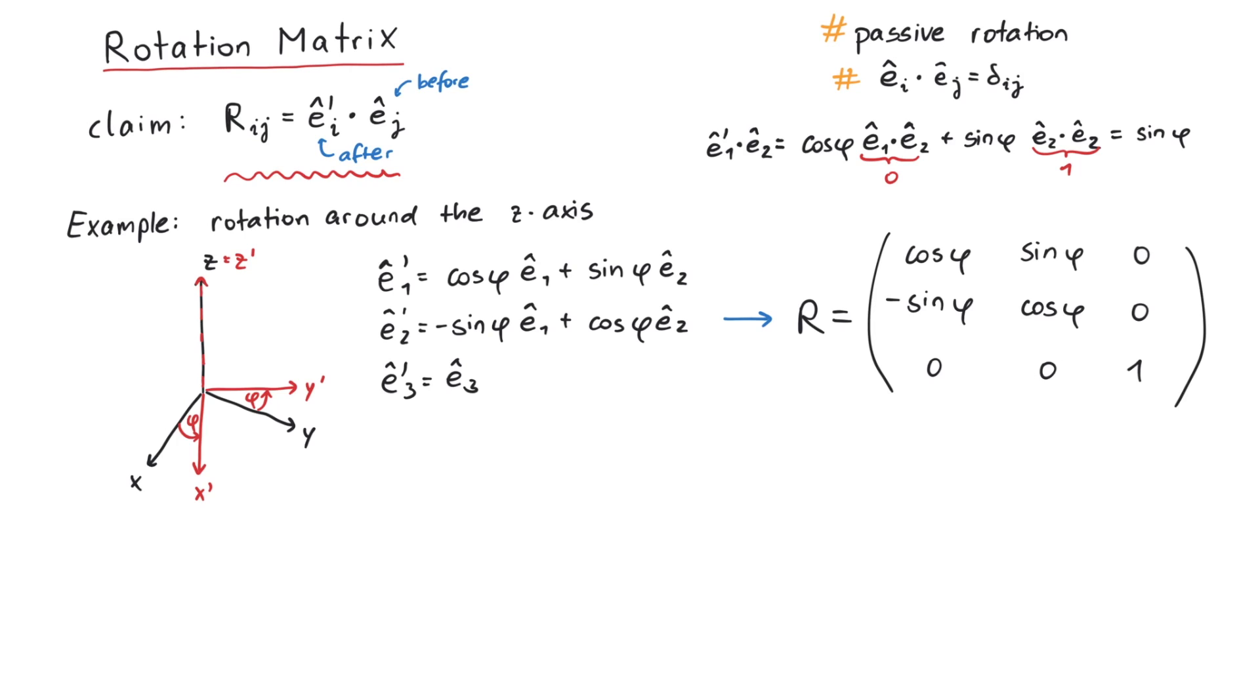So we've seen that our claim works, but why does it work? Can we prove this equation? Let's start with the definition of the rotation matrix. It connects the old and new basis vectors like this.